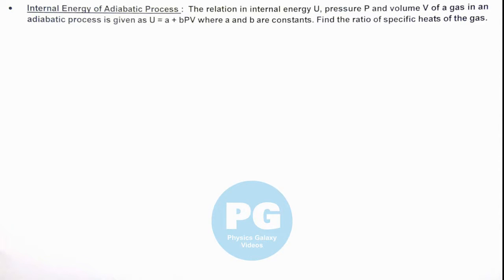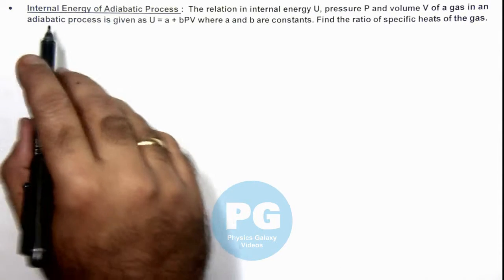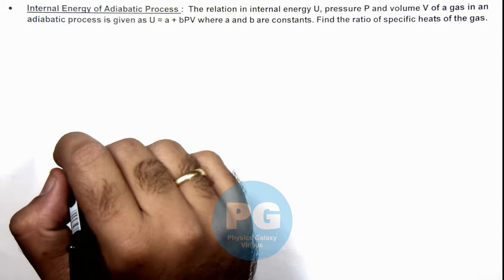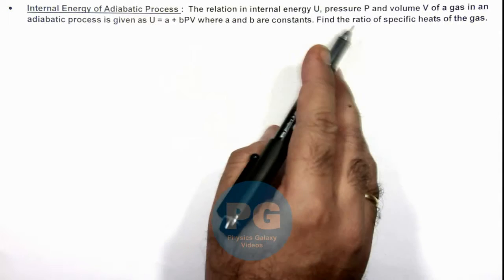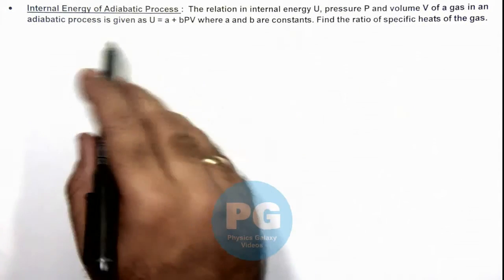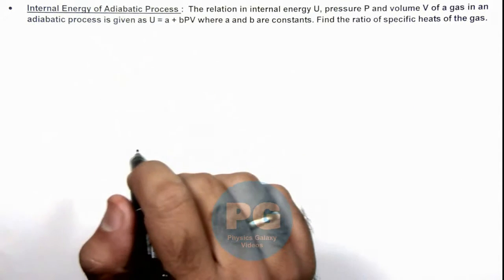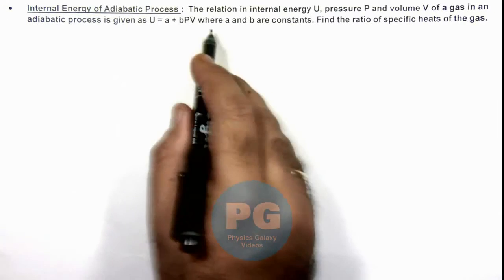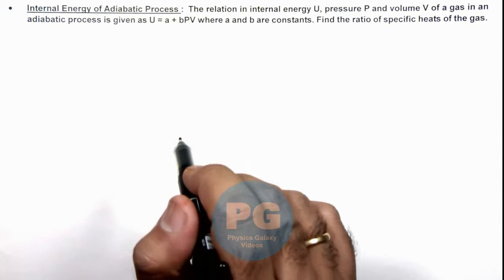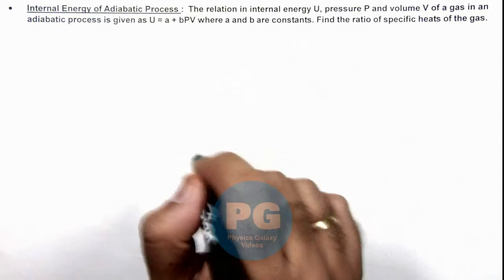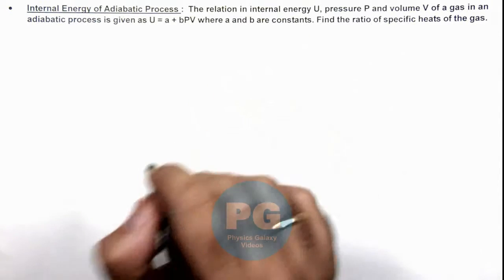In this illustration, we'll analyze the case of internal energy of adiabatic process. We are given that the relation in internal energy U, pressure P, and volume V of a gas in an adiabatic process is given by aY + bPV, where a, Y, and b are constants. We are required to find the ratio of specific heats of the gas. That is, we will be calculating the adiabatic exponent gamma for this gas.